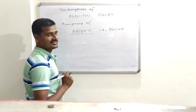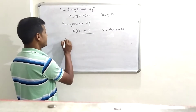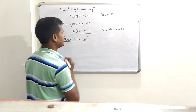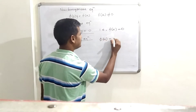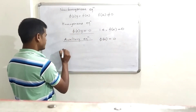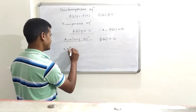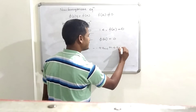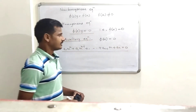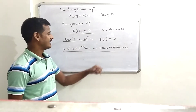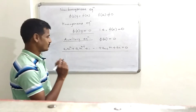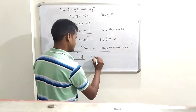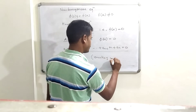Since φ(D) is the nth degree polynomial in D, we define the auxiliary equation. To obtain the auxiliary equation, simply replace D by m, so φ(m) = 0. Expanding this gives: a₀·mⁿ + a₁·mⁿ⁻¹ + ... + aₙ₋₁·m + aₙ = 0. This is an nth degree polynomial in m, and this equation has n roots, counting multiplicities.